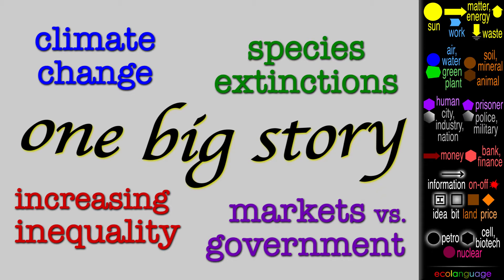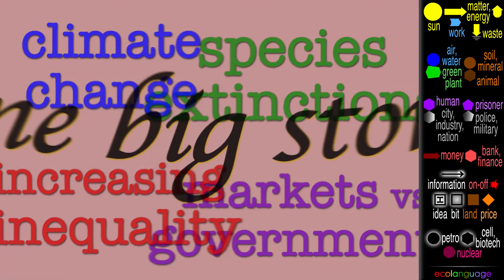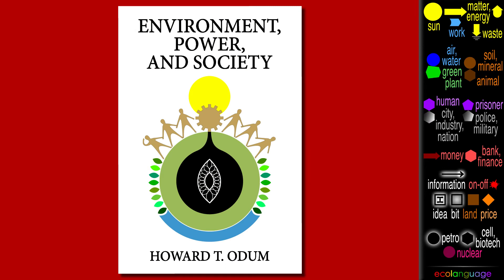These are all getting worse, so we need to make them easy to understand and show how they are connected. I looked for a good way to start to put everything together, and it led to this science book, Environment, Power, and Society, by Howard T. Odom, who was an ecologist.